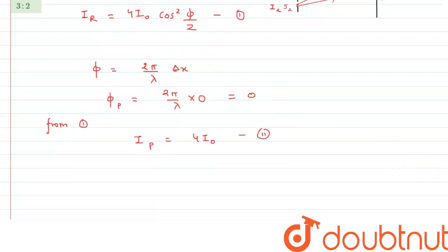Similarly, we calculate for point Q. The phase difference at point Q is 2π/λ times λ/4, which comes out to be π/2.